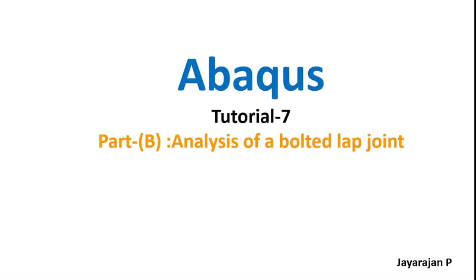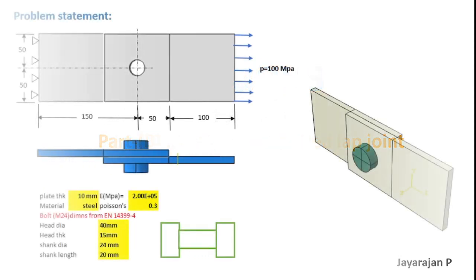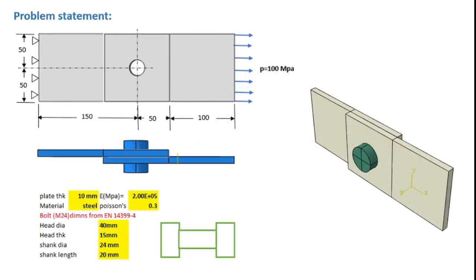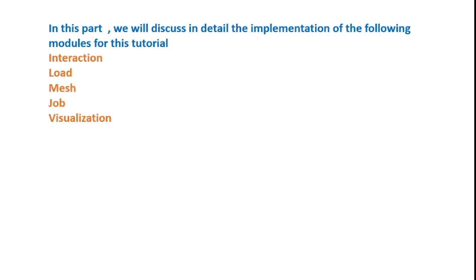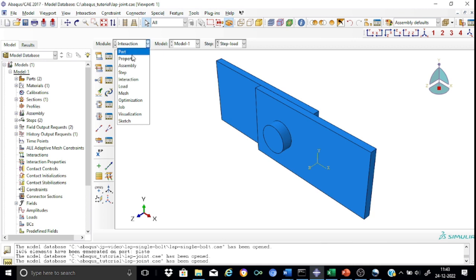Hello, a great welcome to the series on Abacus. Myself, Jarajan P. This is tutorial number 7 and explains the analysis of a simple bolted lap joint using Abacus. This is part B of the tutorial. The problem statement is already explained in part A and hence will not be repeated here. We have covered the part, property, assembly and sub-module in part A.